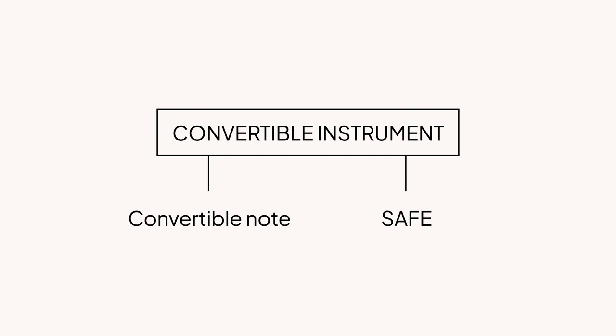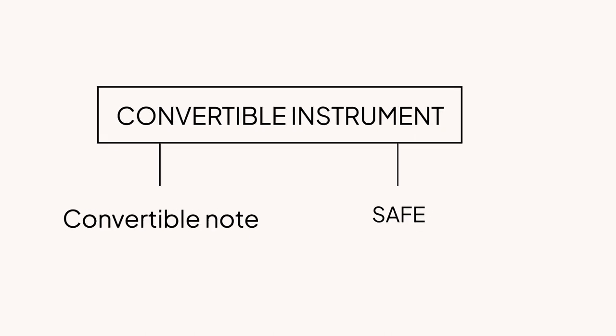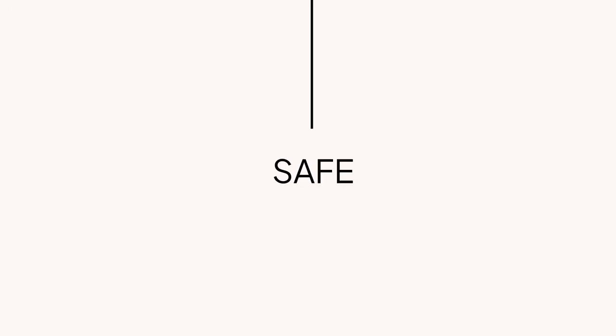Let's talk about the other type of convertible instrument, a SAFE, or Simple Agreement for Future Equity. The main difference between a convertible note and a SAFE is that a SAFE is not debt, meaning it doesn't have an interest rate or a maturity date.